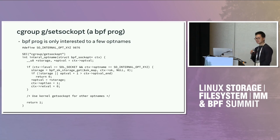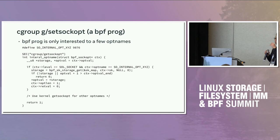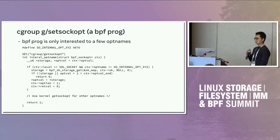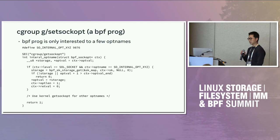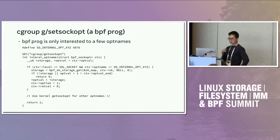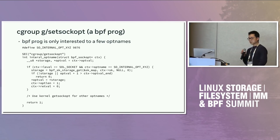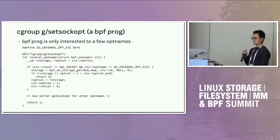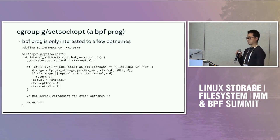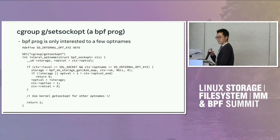The first one is about a cgroup getsockopt/setsockopt BPF program. What it can do for us is we can intercept — there's a hook in the syscall getsockopt/setsockopt. We find it super useful and are a big user of it. One common use case is to create MATTER-only socket options. For example, in our getsockopt BPF program we can understand a specific internal-only option name and do something special — like get something from the socket local storage and return it to user space.